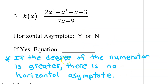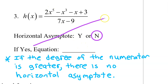In a previous video, we learned that if the degree of the numerator is greater, there is no horizontal asymptote. That's the situation we have right here, so no, there is no horizontal asymptote. Sometimes if the degree of the numerator is greater, there's something called a slant asymptote — an asymptote which is a diagonal line. But that only happens when the numerator degree wins by exactly 1, so this problem doesn't even have that.